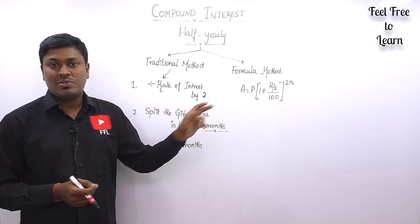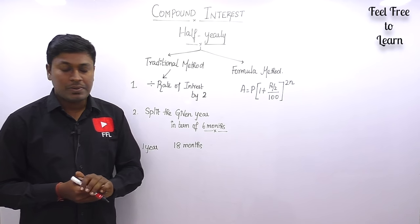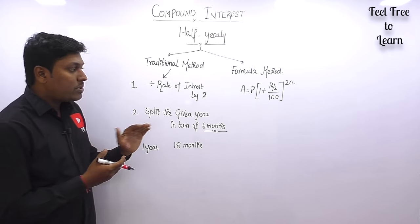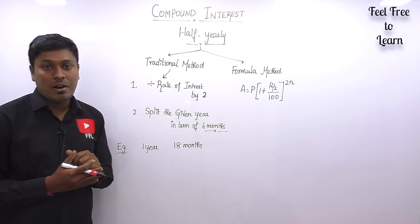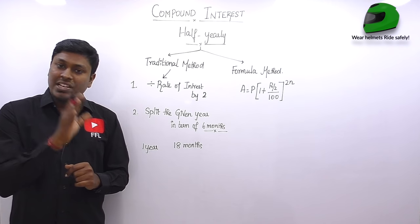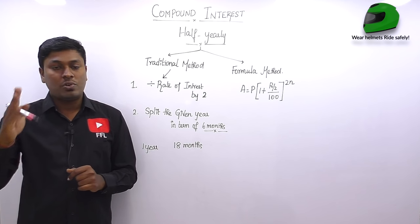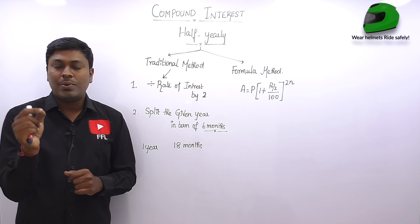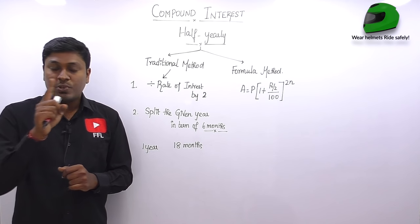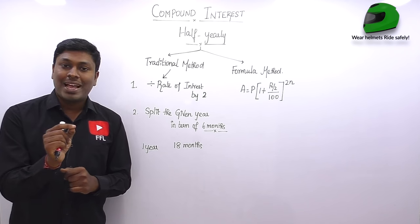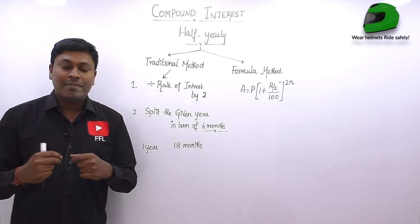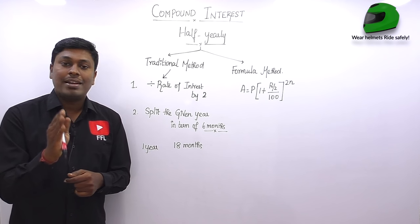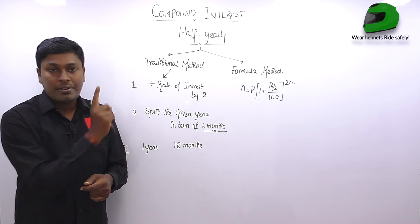If you solve more than 20 to 30 questions, by seeing a question you will get an idea whether to use the formula or the traditional method. Both methods will help you solve easily. So those are the basics of the formula method — directly substitute the given values. Now let me move on to the traditional method.